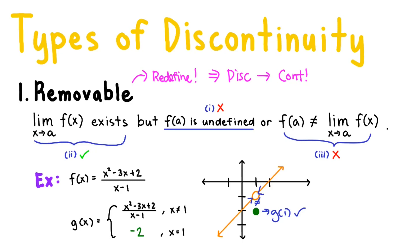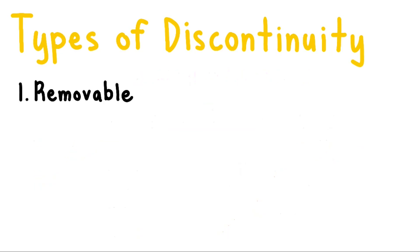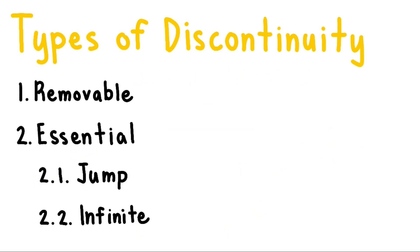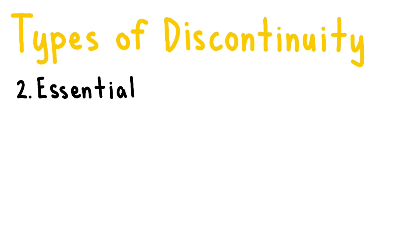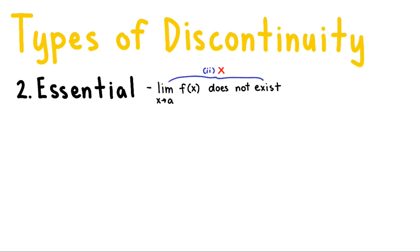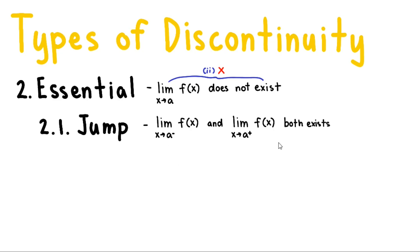Let's move on to the next type. Opposite from removable discontinuity, where the limit exists, in essential discontinuity the limit of f of x as x approaches a does not exist — condition 2 in continuity isn't satisfied. When this happens, we have two subtypes. The first is jump essential discontinuity, which occurs when the limit from the left and the right both exist, but these two are not equal. When they are not equal, the limit does not exist, so it is indeed a subtype of essential discontinuity.